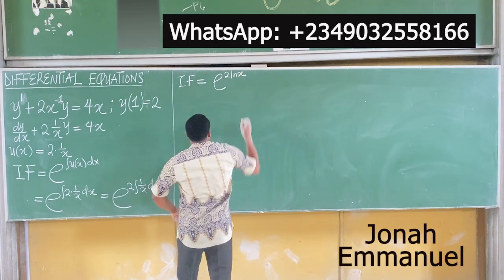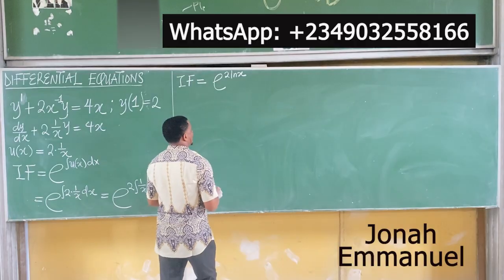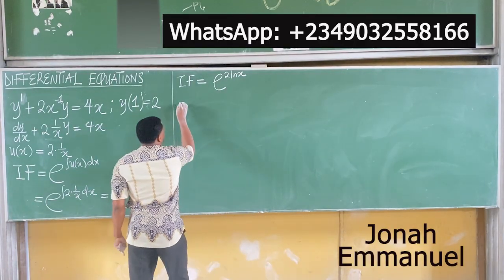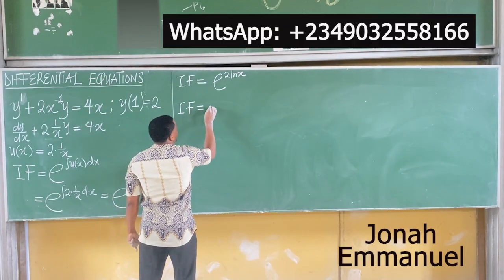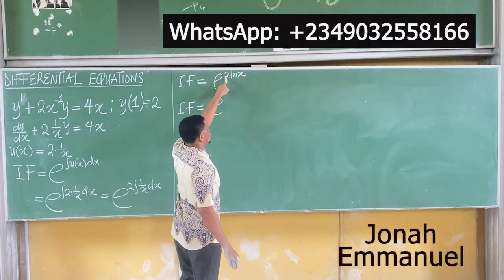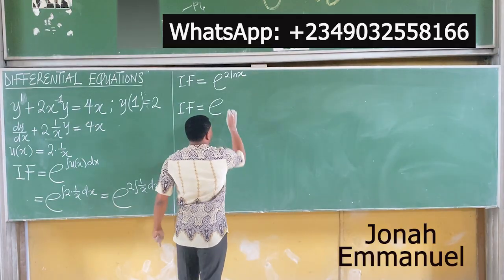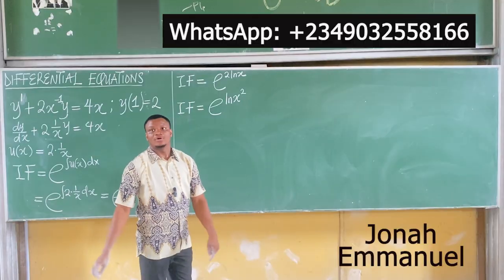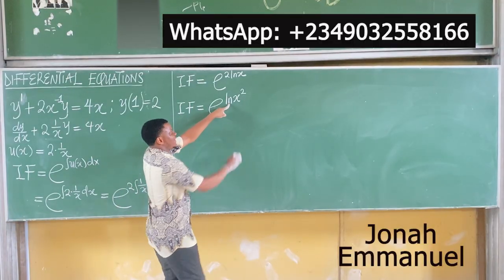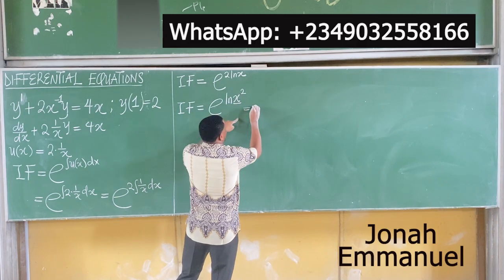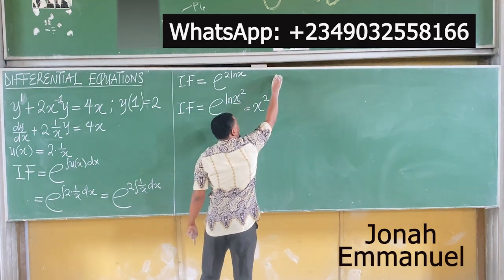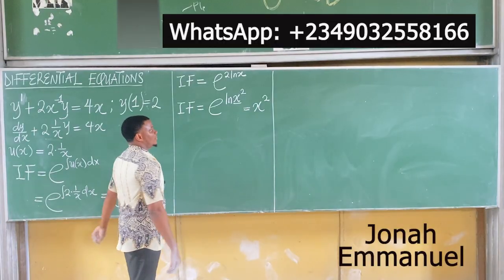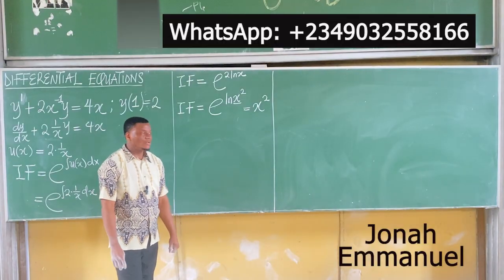So the integrating factor is e raised to 2·ln x. As explained in a previous example, when you have a term like this, the exponent 2 comes down as a power: e^(2·ln x) = e^(ln x²) = x². So the integrating factor is x². (Link to previous lesson in the video description.)